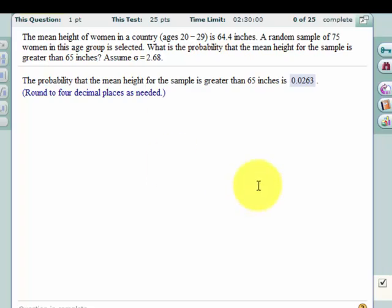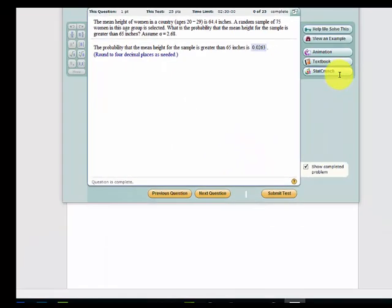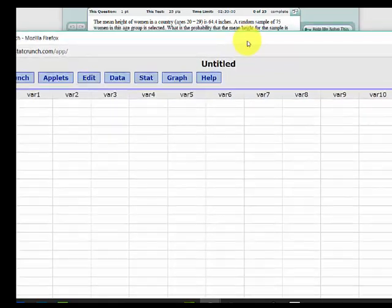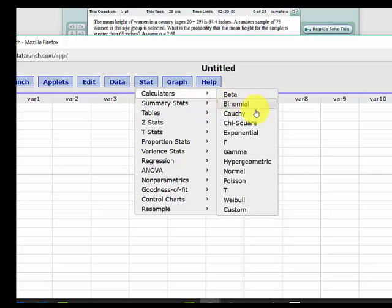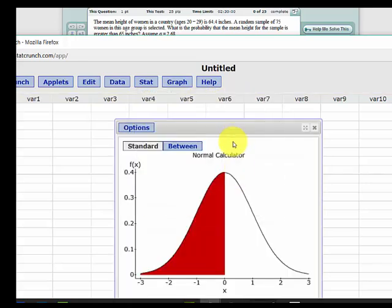I'm going to show you the wrong way to solve this using StatCrunch first. Let's click on StatCrunch, bring it down so we can see the data. We'll go to Stat, Calculator, Normal.